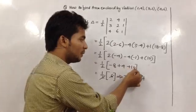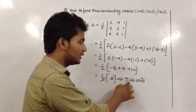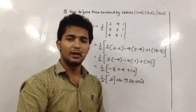Minus 8 plus 4 plus 10 equals 6. Divide by 2, that is 3 square units.